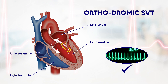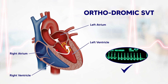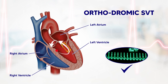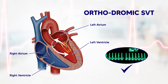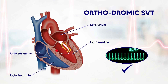So that's orthodromic SVT, and the outcome is a narrow complex regular tachycardia — the kind of tachycardia where, without knowing what's going on, you'd say 'that looks like an SVT, I've seen this before.' That's orthodromic SVT.